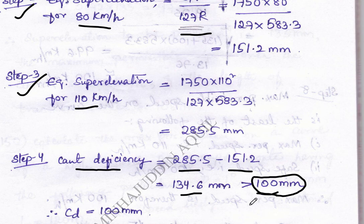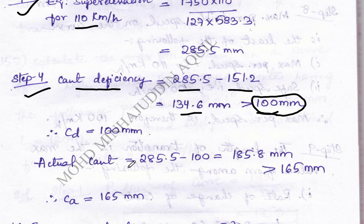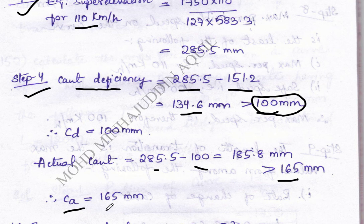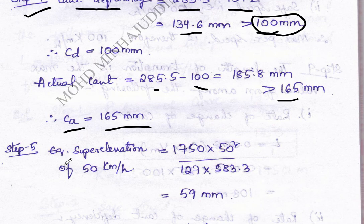Since cant deficiency exceeds 100 mm, we take 100 mm as the cant deficiency. Actual cant can be calculated as equilibrium super elevation for 110 km/h minus CD. As per standards, the maximum actual cant is 165 mm. If the calculated value is more than 165 mm, we take 165 mm; otherwise, we take the calculated value.